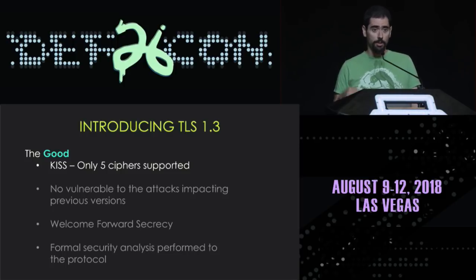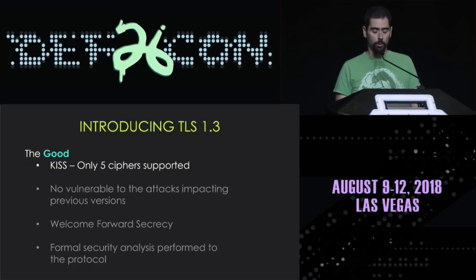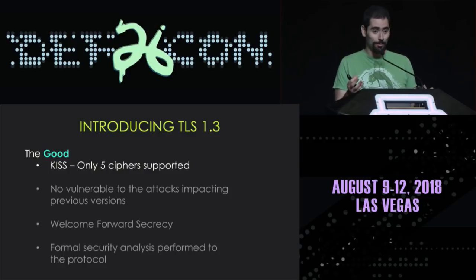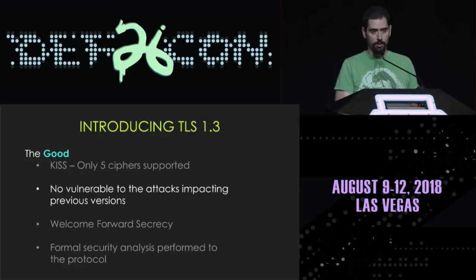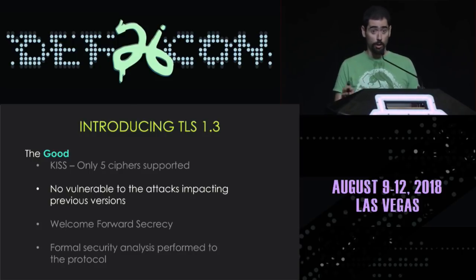One of the good things is that it has followed a keep-it-simple approach. Only five ciphers are going to be defined in the TLS 1.3 specification, which means the implementation will be easier and the complexity of the protocol reduced. Compared to previous versions of TLS — which supported dozens of ciphers — that's a huge improvement. Additionally, TLS 1.3 will not be vulnerable to previous known attacks like RC4, RSA key exchange, CBC encryption mode, or compression attacks.